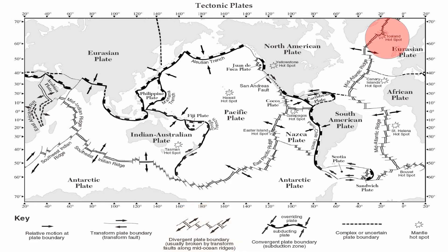We have a couple of locations where continents are splitting apart — what we call continental rifting. Iceland is one example where a continent is splitting apart. The East African Rift is a zone where we believe the eastern part of Africa is splitting apart.